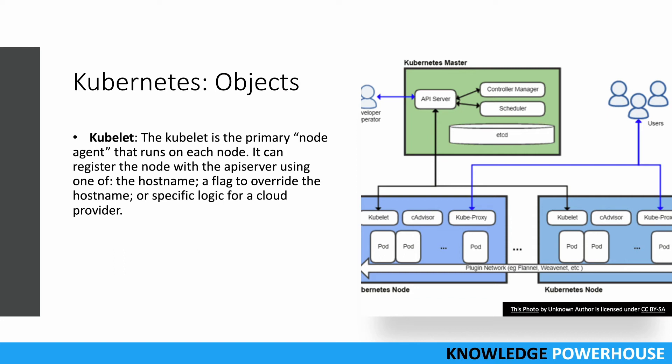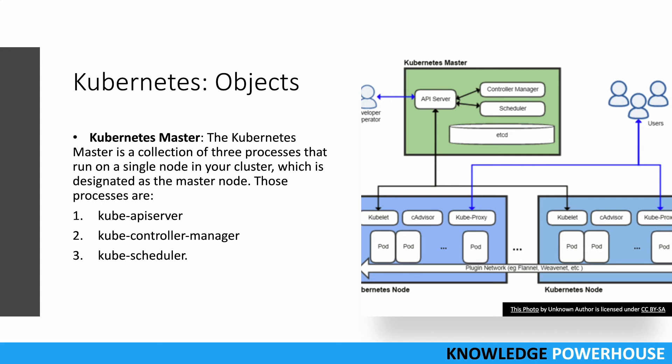Kubelet is an important concept - a small piece of software running on each node, with one instance per node. It communicates with the master and acts as an agent. It registers the node with the API server, so if a new node is added, the kubelet informs the API server. It can use the hostname or a flag to specify which node it manages. The master comes to know about a node via kubelet.